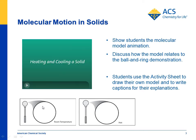On the student activity sheet, students can draw their interpretation of what they saw in the animation and also write captions about their drawing to explain what happened on the macroscopic level — why did the room temperature sphere pass through the ring, but when it was heated it couldn't, and when it was cooled it could pass through again?